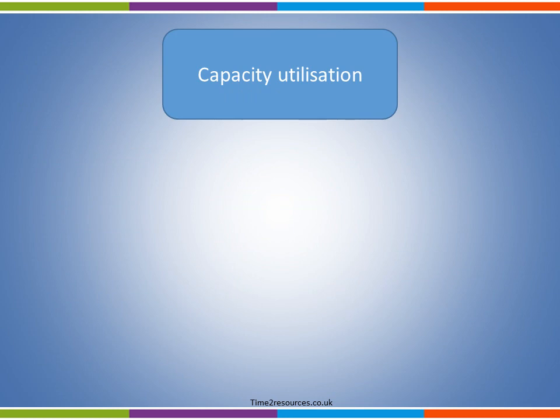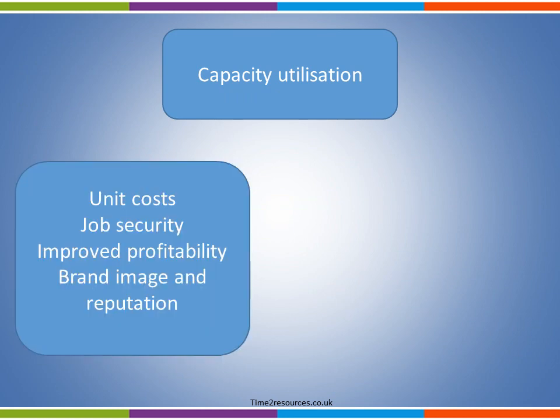There are advantages to high or increasing capacity utilisation. As we saw in the example, one advantage is that unit costs are lower. Another advantage is job security — employees will be kept busy and will feel like they are working for a profitable and successful business. This will meet their security needs, which will increase motivation as this is one of the lower order needs on Maslow's hierarchy.